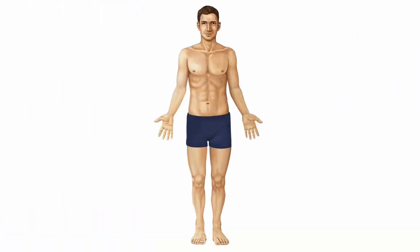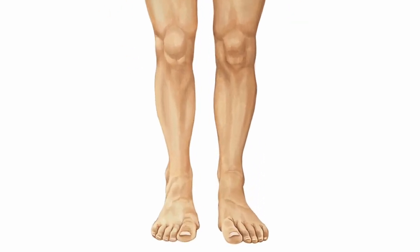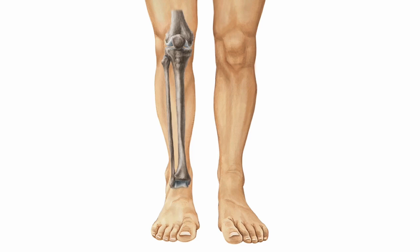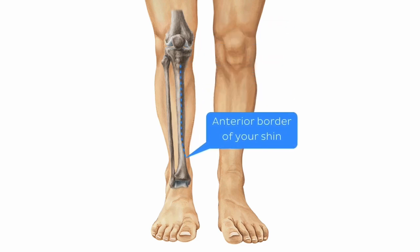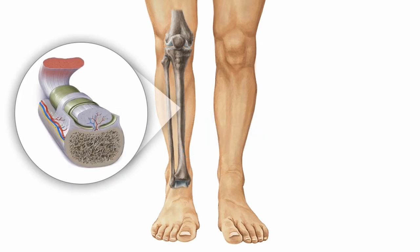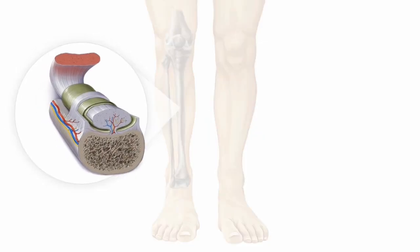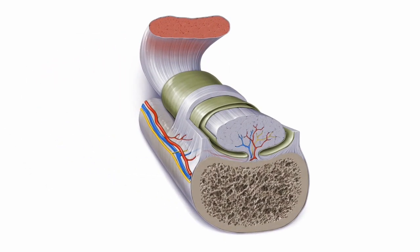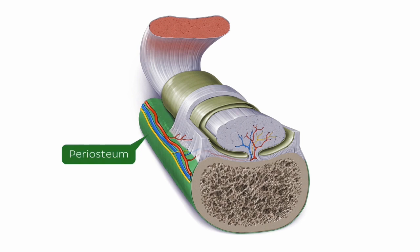So why is the kick to the shin so sore? Well, it could be because there's no musculature cushioning the blow. After all, if you feel your legs, you'll notice the anterior border of your shin just deep to the skin. It could also be down to the fact that your shin bone is covered by a fibrous layer called periosteum, which is filled with pain receptors.